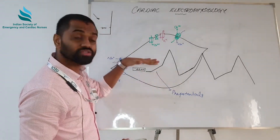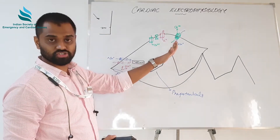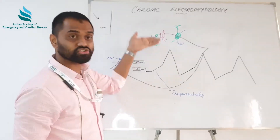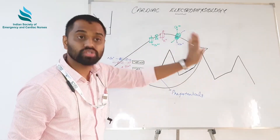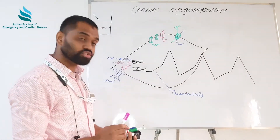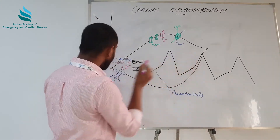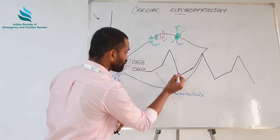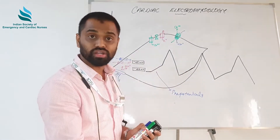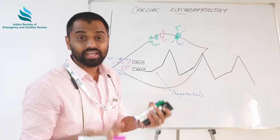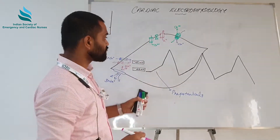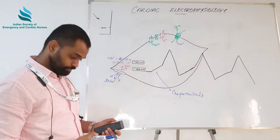Now we must understand how the action potential is transmitted from one segment of the SA nodal cell to another, and then to adjacent cells. Here it was calcium involved in depolarization, along with the leaky sodium channels slowly taking the resting membrane potential from minus 60 to minus 45, generating its own action potential without any external stimulation. The SA nodal cell does not require any stimulation from outside.